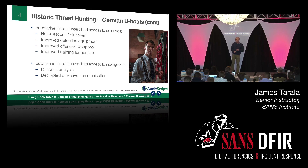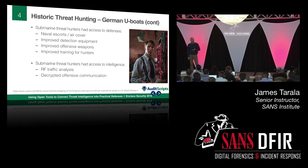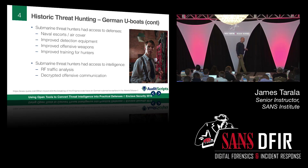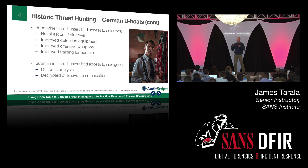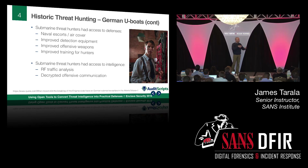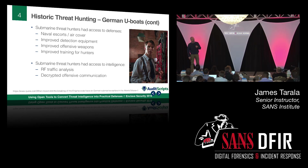Prior to 1943, the primary defense was avoidance. They would do RF traffic analysis — they couldn't necessarily read the messages, but they could figure out where signals were coming from. If signals came from a certain area, ship captains would simply avoid it. But then submarine captains would watch Allied traffic and move where the ships were going. It became a game of cat and mouse that wasn't really working out.